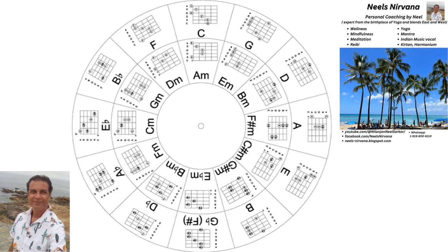Today's topic is about music — Western music — and talking about the circle of fifths. This is theory, particularly for guitar. The diagram I'm sharing is for guitar, but it's applicable to any other instrument.